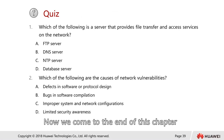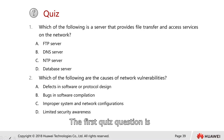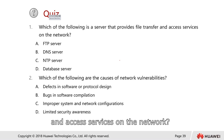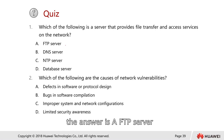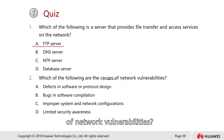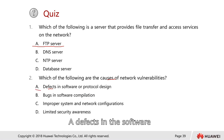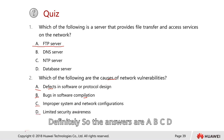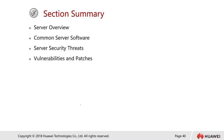Now for two quiz questions. Question one: which of the following is a server that provides file transfer and access services on the network? The answer is FTP server. Question two: which of the following are causes of network vulnerabilities? The answers are: A) defect in software or protocol design, B) bugs in software compilation, C) improper system and network configuration, and D) limited security awareness. All of A, B, C, D are correct.